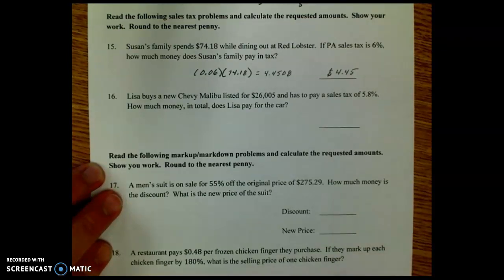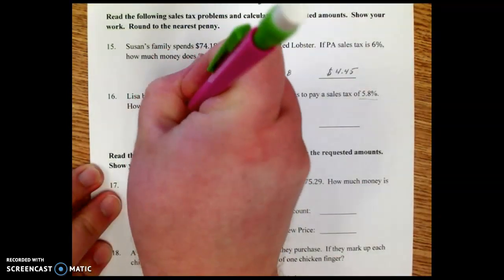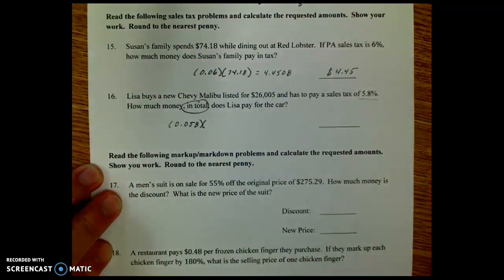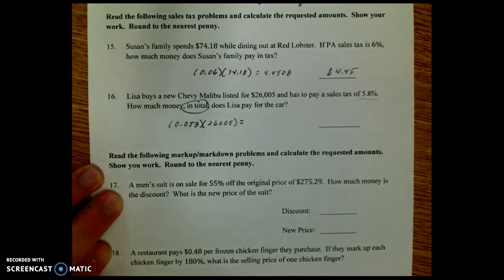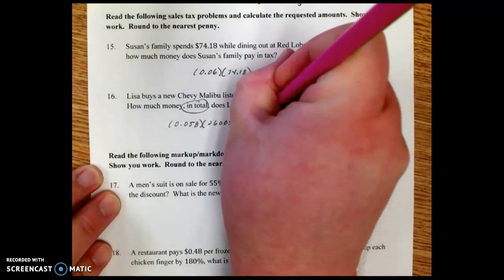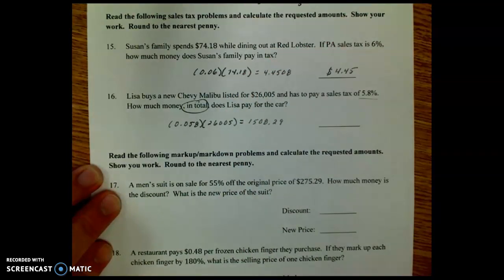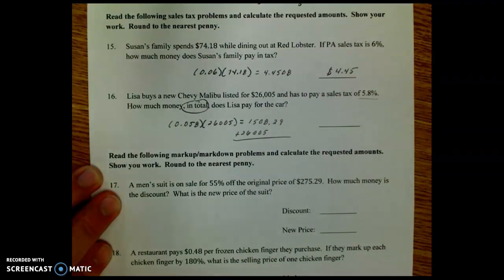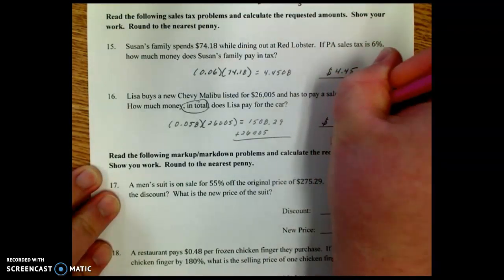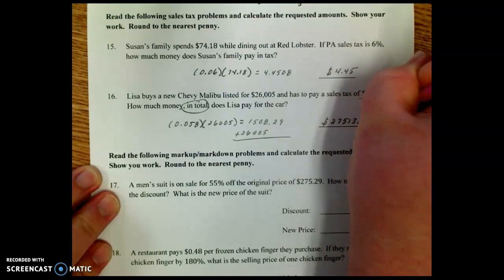Number 16. Lisa buys a new Chevy Malibu listed for $26,005 and has to pay a sales tax of 5.8%. How much money in total, that's a key word, does Lisa pay for the car? So we're going to convert this percent to a decimal. That'd be 0.058. And then we're going to multiply by the price of the car. That's $26,005. So if we punch that into our calculator, we get this, $1,508.29. But we don't want to put that as the answer because it's how much does she pay for the car, so now we need to add $26,005 to that. And that gives us a total cost of the vehicle at $27,513.29.